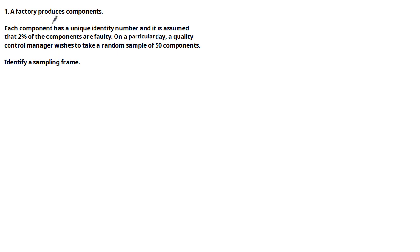A factory produces components. Each component has a unique identity number and it is assumed that two percent of the components are faulty. On a particular day, a quality control manager wishes to take a random sample of 50 components. We're asked to identify a sampling frame. Well, since we are testing a sample of 50 components and each component has a unique ID number, a sampling frame could be the list of 50 ID numbers.